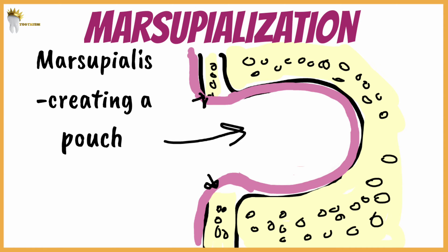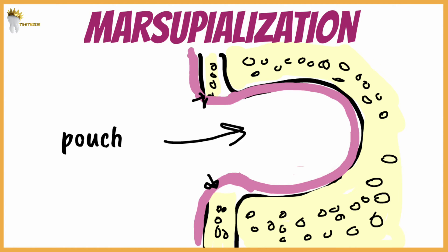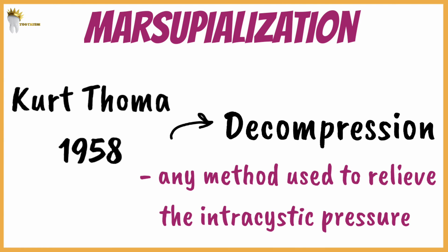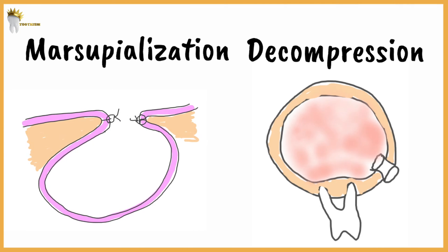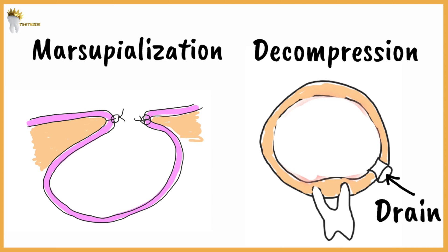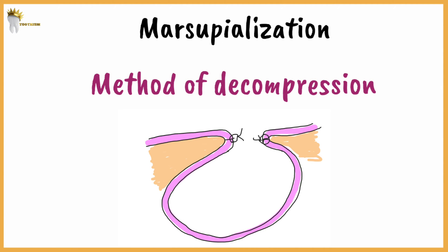Based on this concept, Kurt Thoma described decompression in 1958. Decompression is defined as any method used to relieve or reduce intracystic pressure by keeping a patent opening into the exterior, which could be the mouth, nose, or maxillary sinus. It can be performed by making a small opening in the cyst and keeping it open with a drain. Please remember that marsupialization and decompression are not the same procedure — decompression means relieving the pressure inside the cyst, while marsupialization means converting the cyst into a pouch.